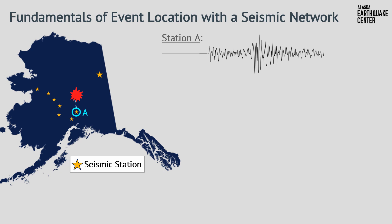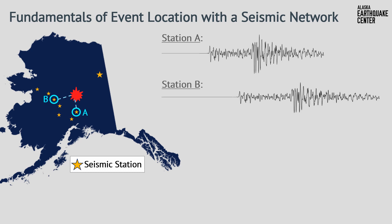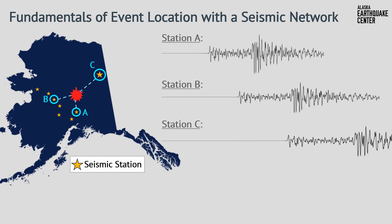Farther away, Station B records waveforms that might look something like this. We can see that with increasing distance, the waveforms arrive later and later. The first step to processing these waveforms for an earthquake location is to indicate the arrival of the primary wave, or P wave, which is a compressional wave corresponding to vertical ground motion. The P wave is the first impulsive arrival at each seismic station — for Station A it's here, Station B here, and Station C here.